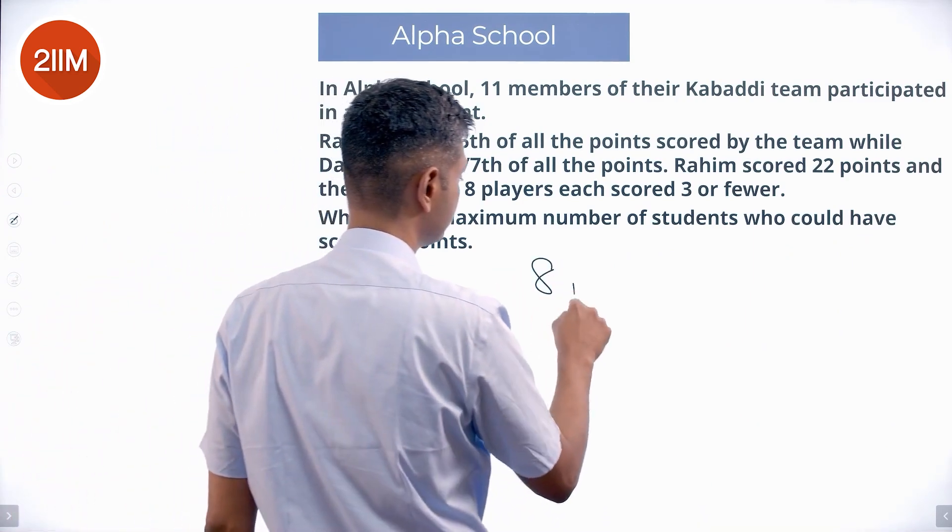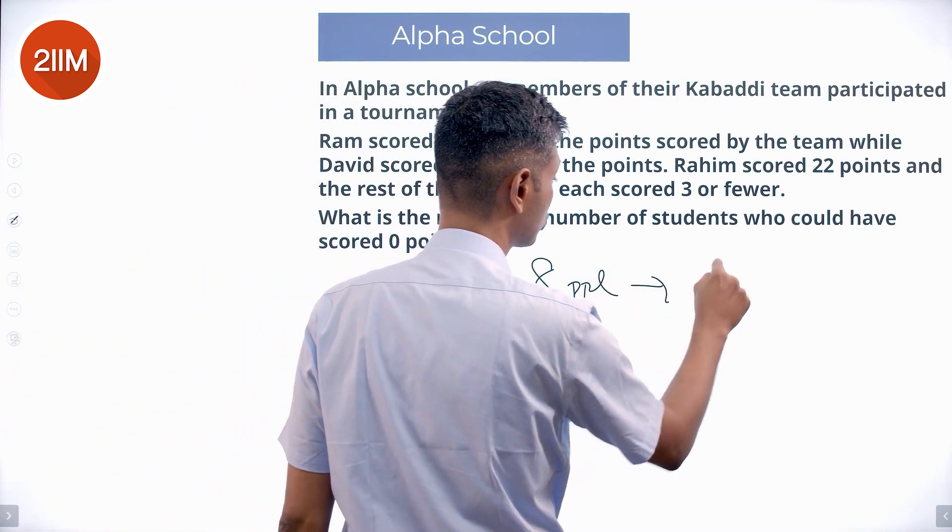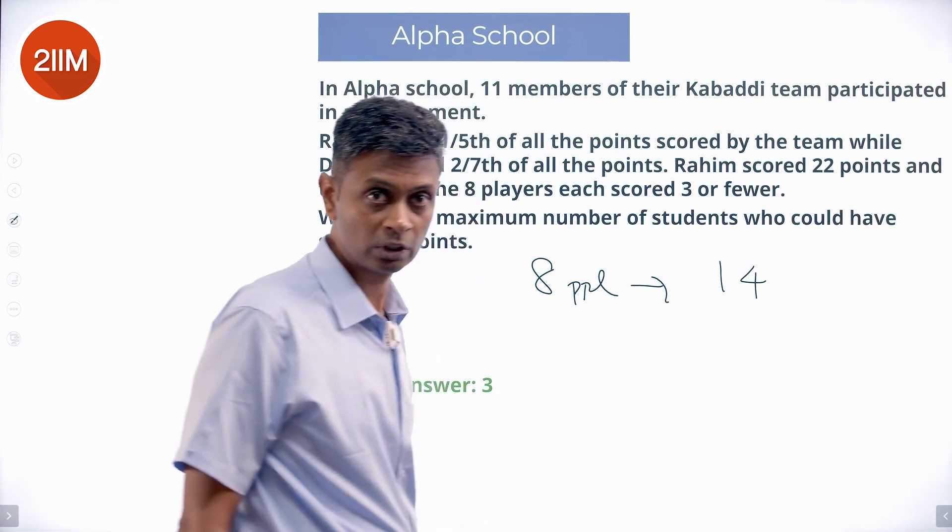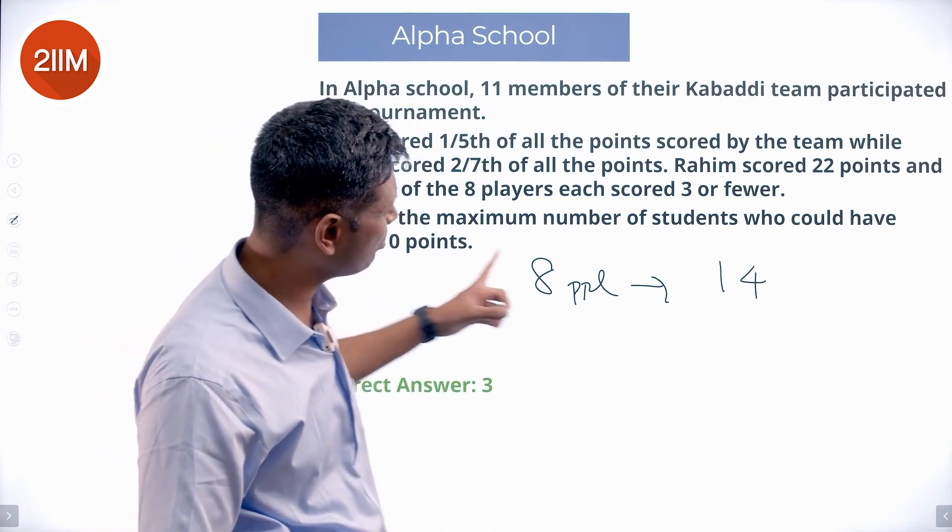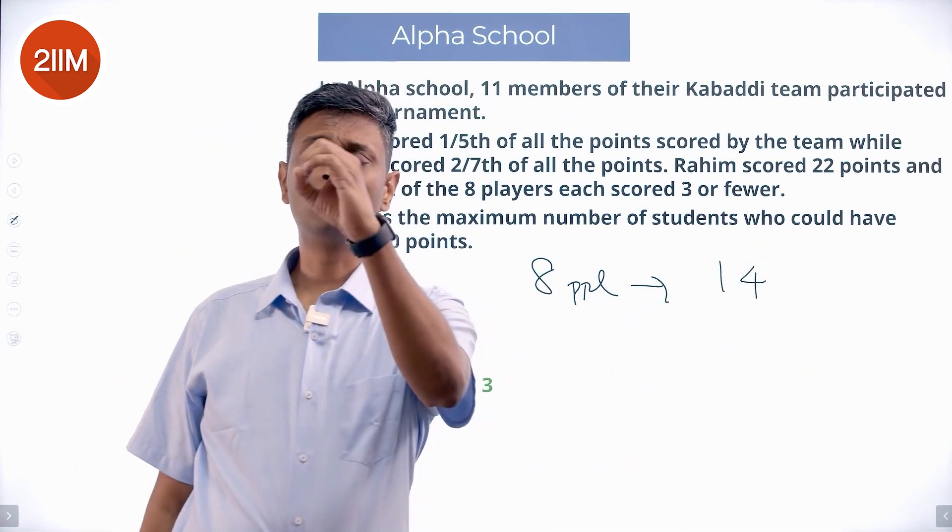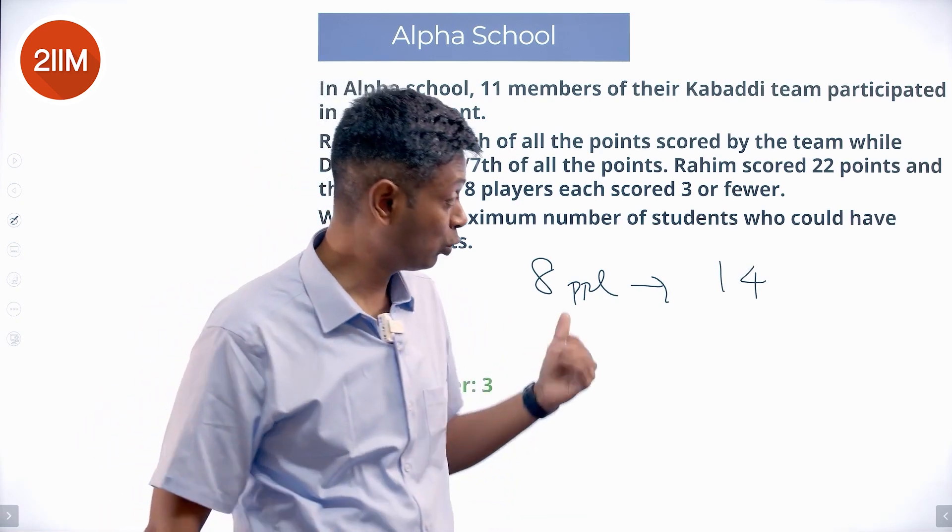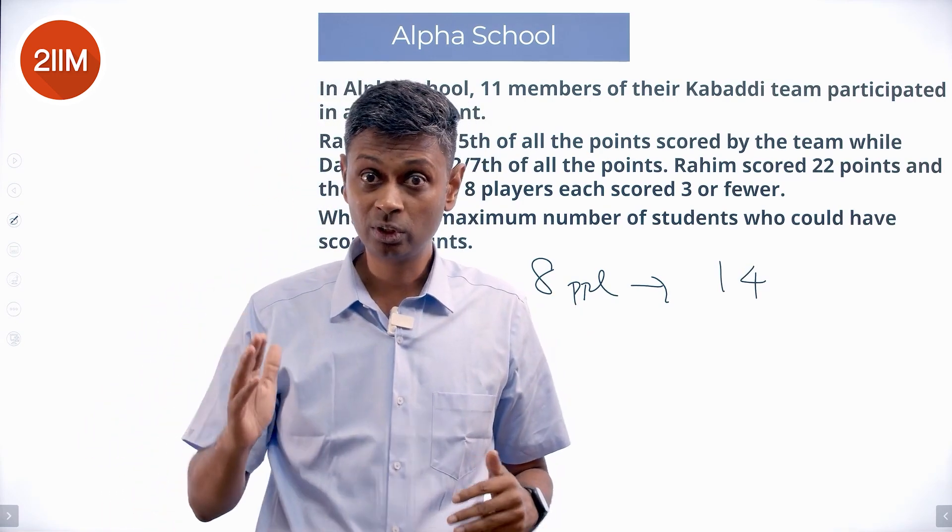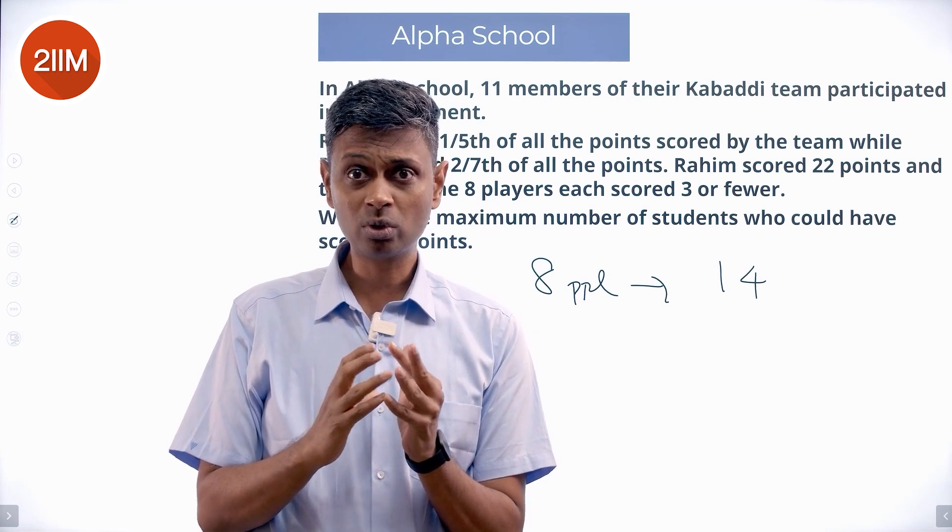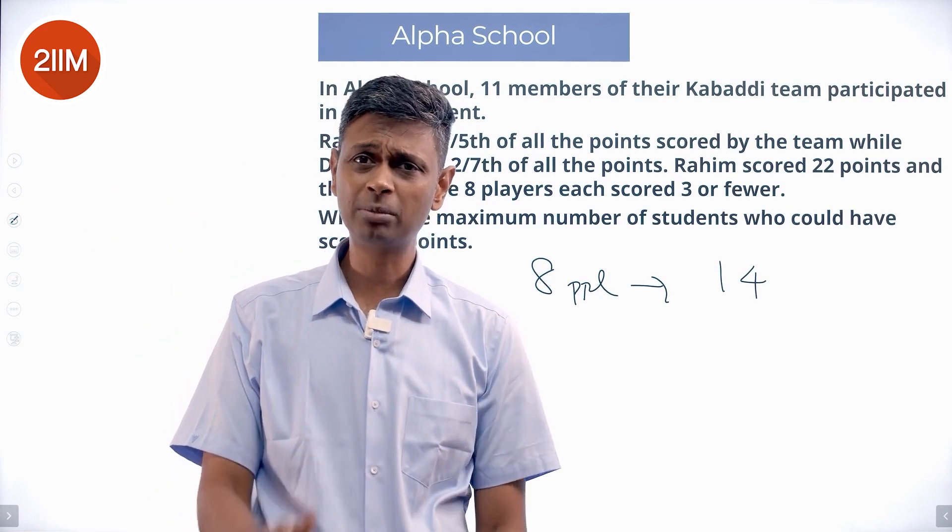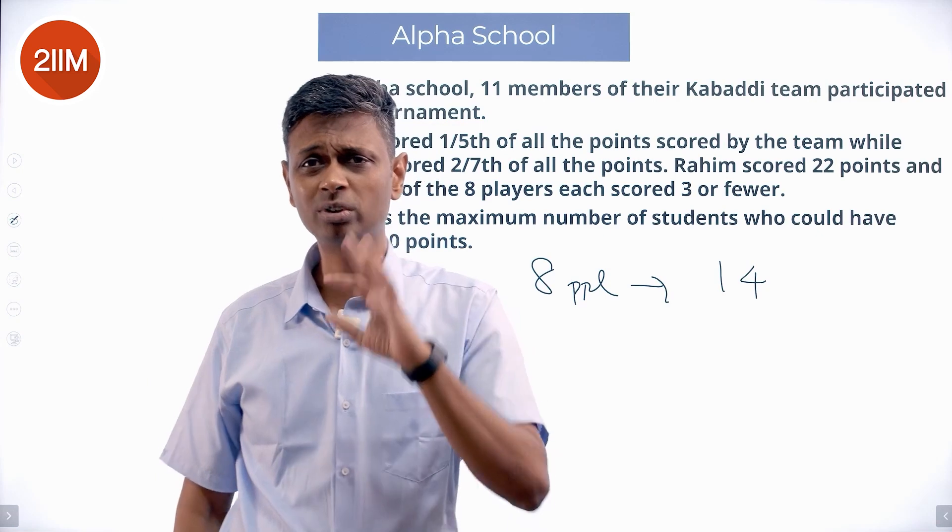So, these 8 people together scored 14 points. We want the maximum number of students who could have scored 0. This 14, larger people should have scored 0. That means very few of them should have scored up to 14. Get a few to get maximum.